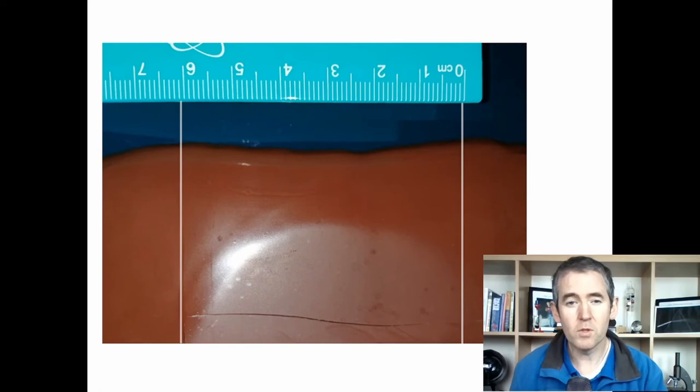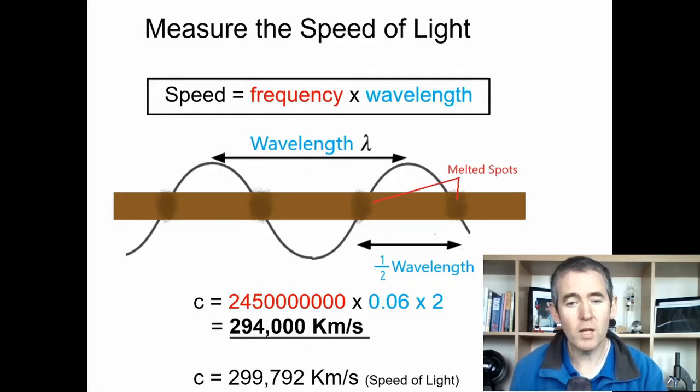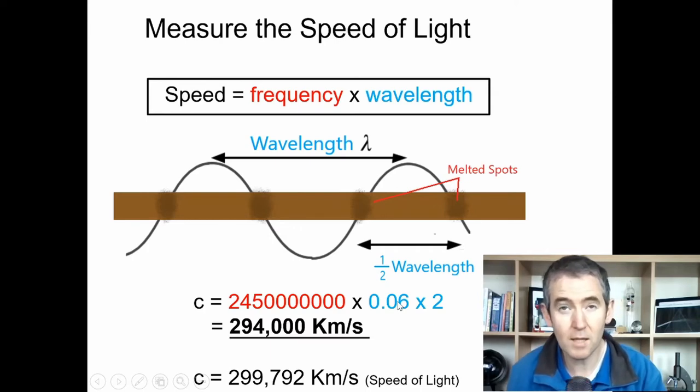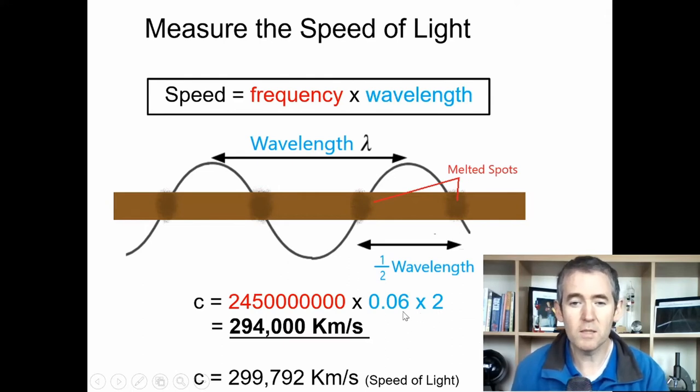If we take that result and put it into our equation, this C down here is the speed of light. The speed of light equals the frequency, 2450 megahertz, multiplied by the wavelength. The wavelength is converted to meters. I found it to be 6 centimeters, so 6 centimeters converted to meters is 0.06, and then it has to be multiplied by 2 because the 6 centimeters is half a wavelength.